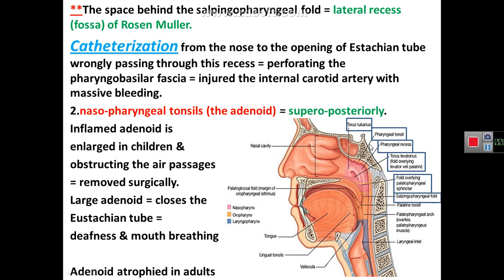A hypertrophied adenoid closes the air passages of the nasopharynx, making the patient breathe through the mouth. This is most commonly seen in children. The enlarged adenoid also closes the auditory tube, resulting in partial deafness. It is treated surgically by removing the pharyngeal tonsil or adenoid. In adults, this condition does not occur because the pharyngeal tonsil atrophies in adulthood.